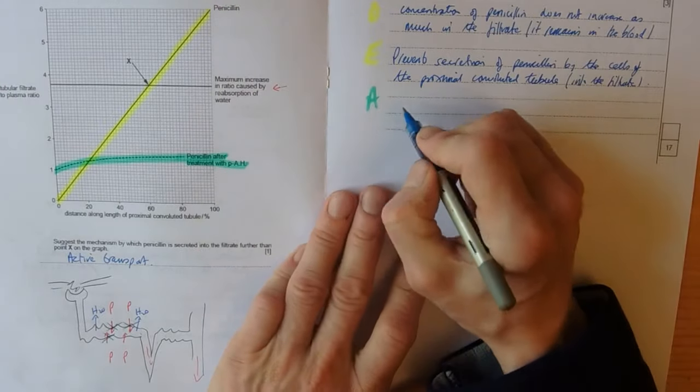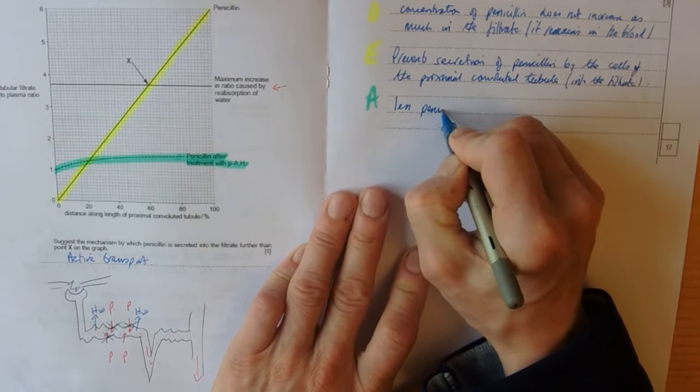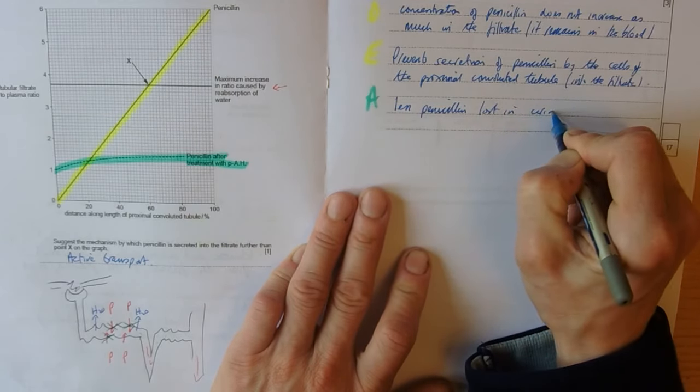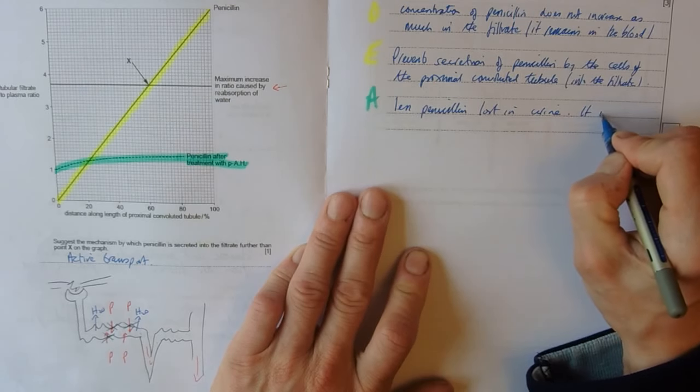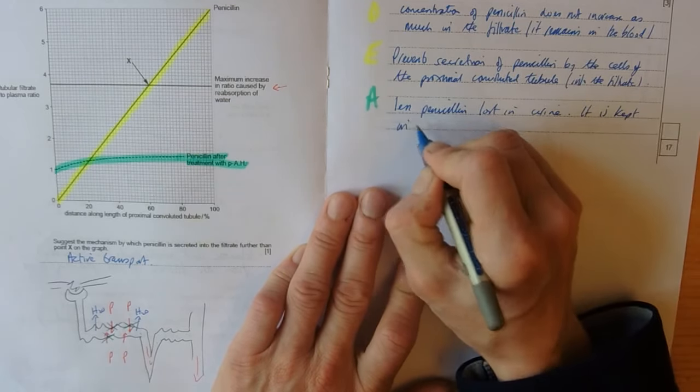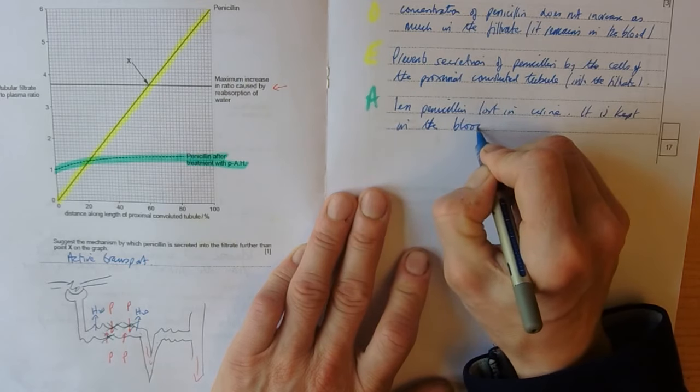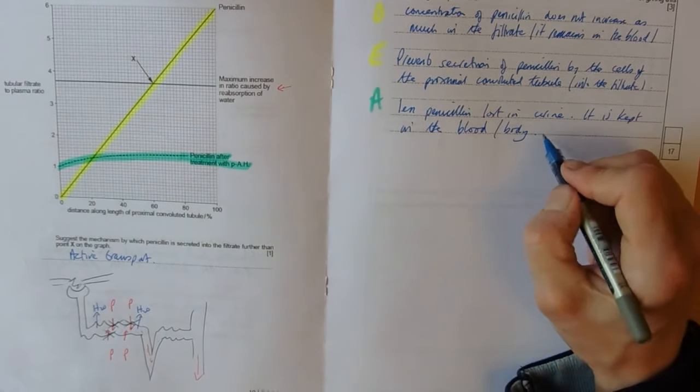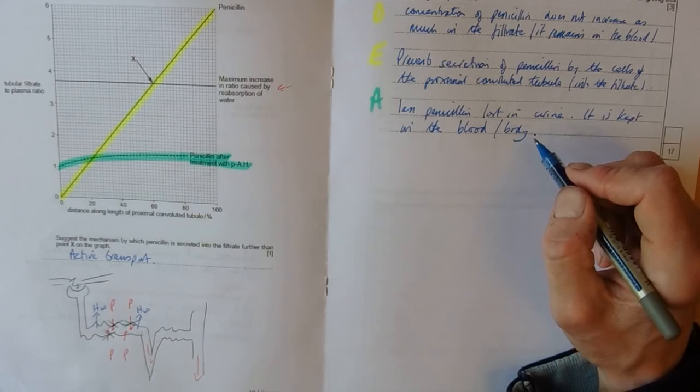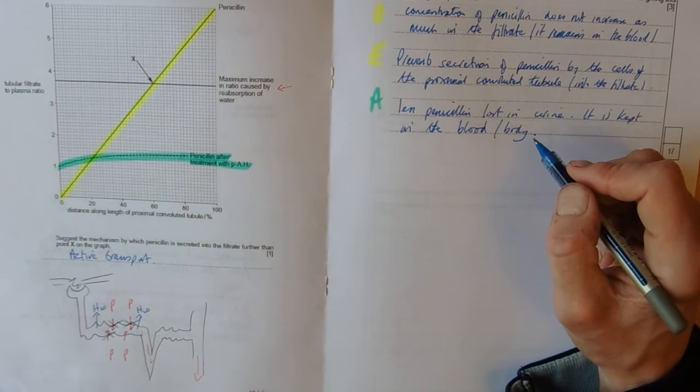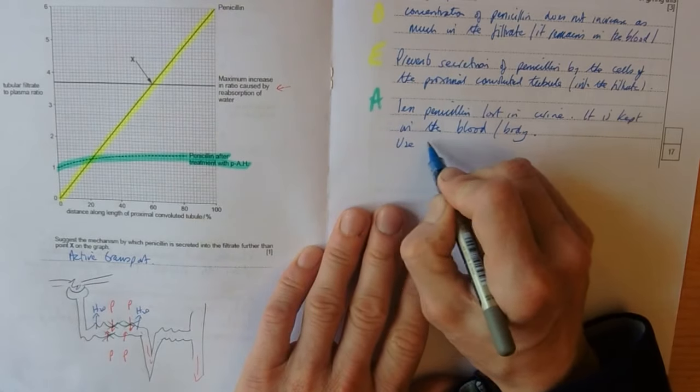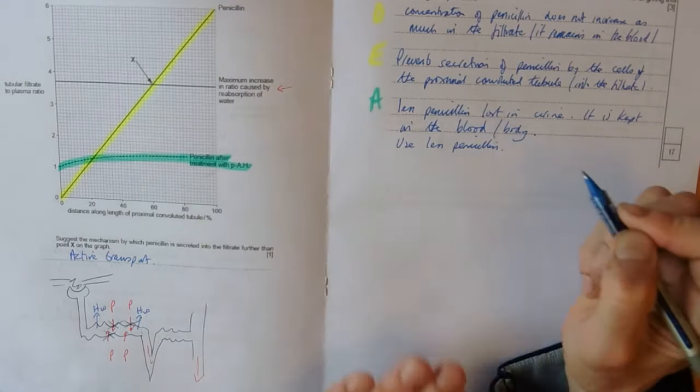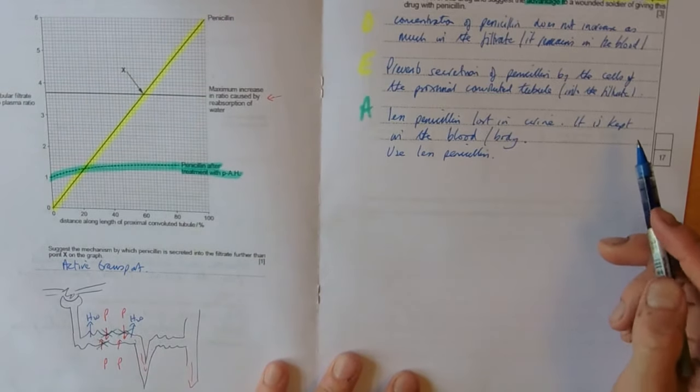So, less penicillin lost in urine. And it is kept in the blood or the body. So you could actually, you wouldn't need to give the soldier as much penicillin as well. So you could use less.